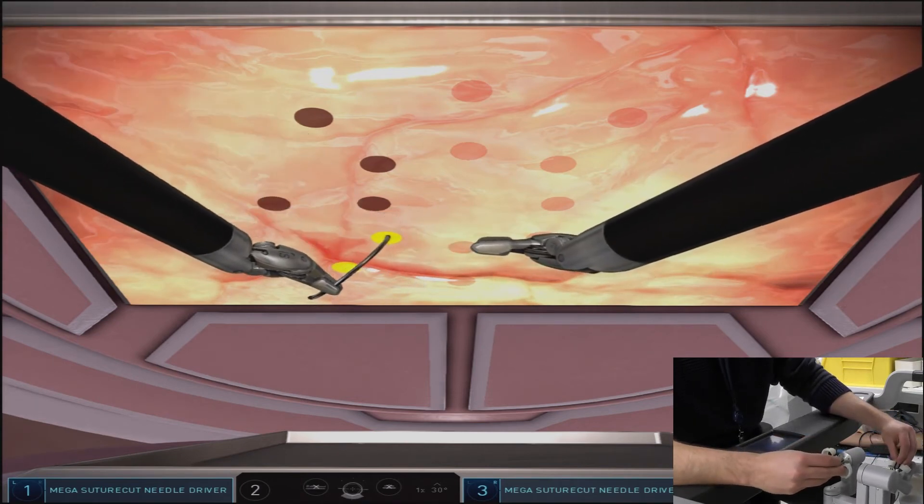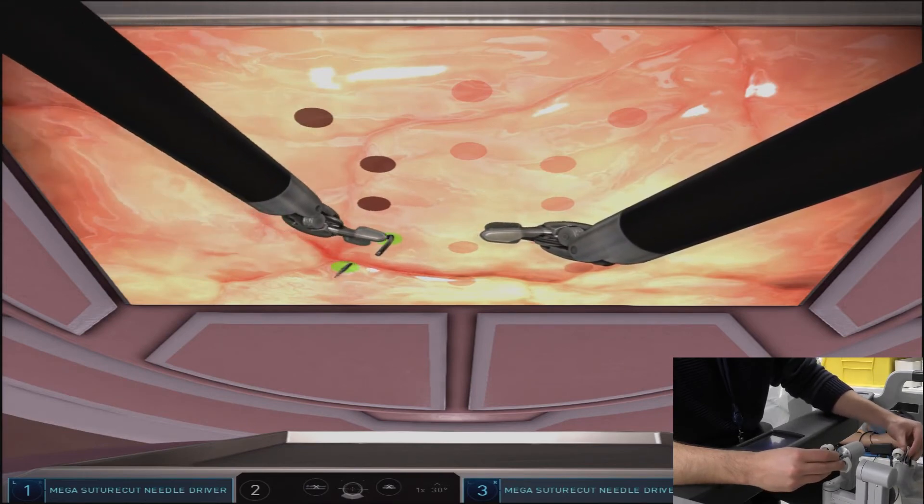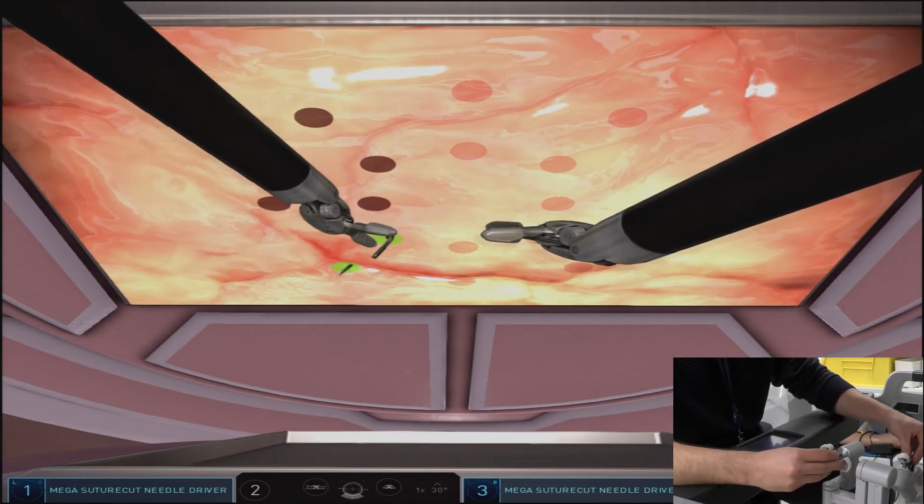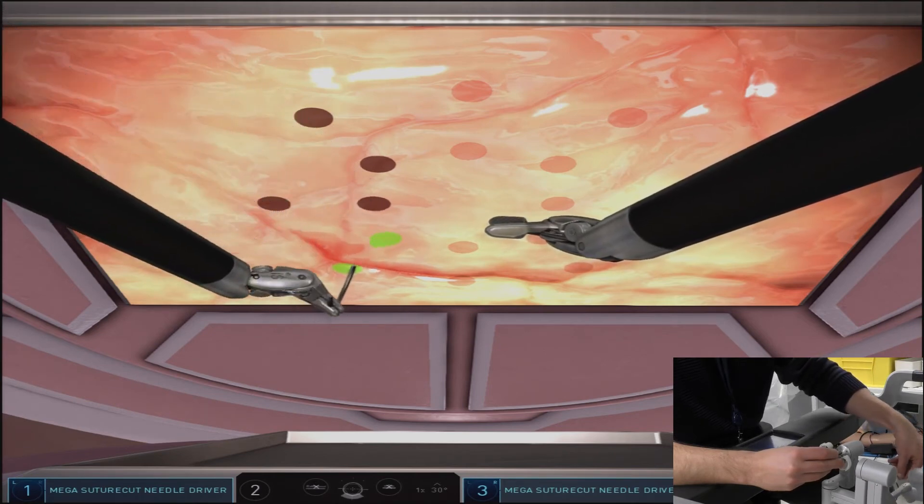As I said earlier, there are multiple ways to approach these throws. This next corner throw I found easiest to do with the left hand, as I could quickly reload and the needle seemed to be in the best position and my hand had the best range of motion to pull it through.